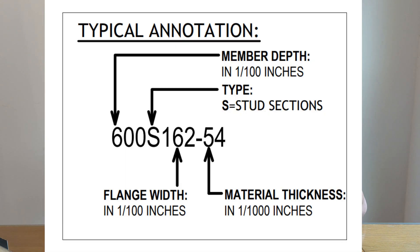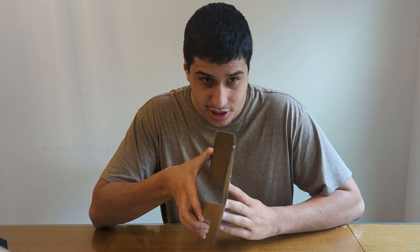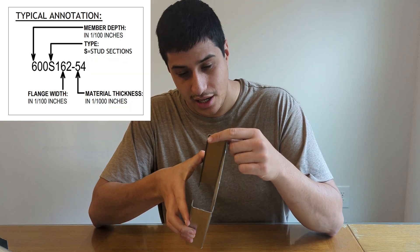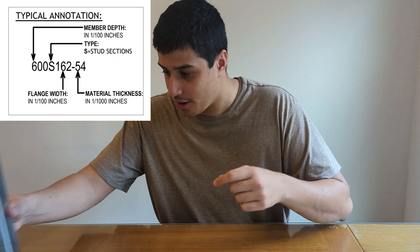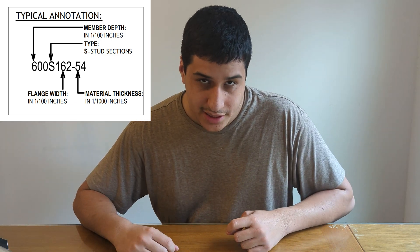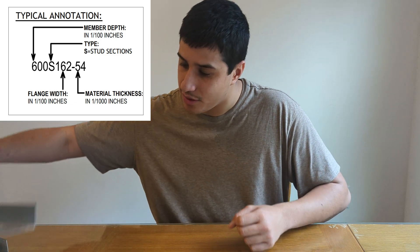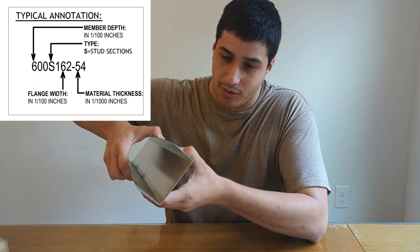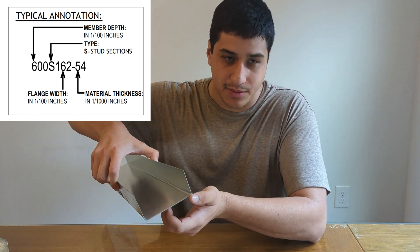The first part of the stud is the web depth expressed in hundreds of inches. The second part of the stud is the product code in a letter. S is the typical shape for a stud — you can see it has the return lips right over here.